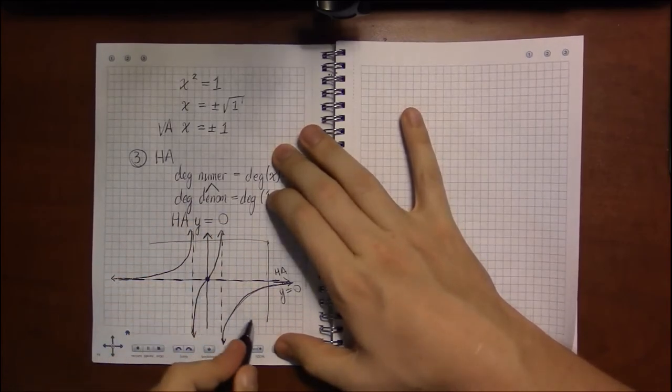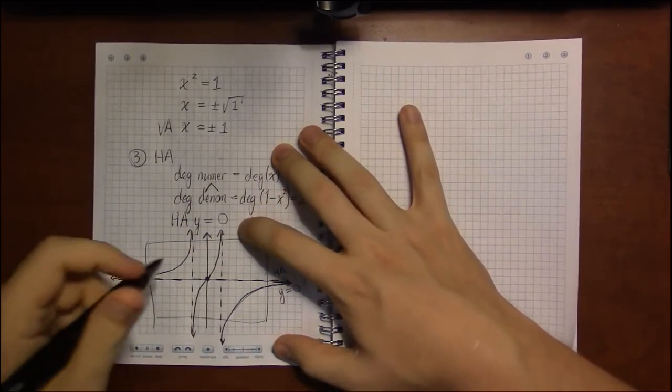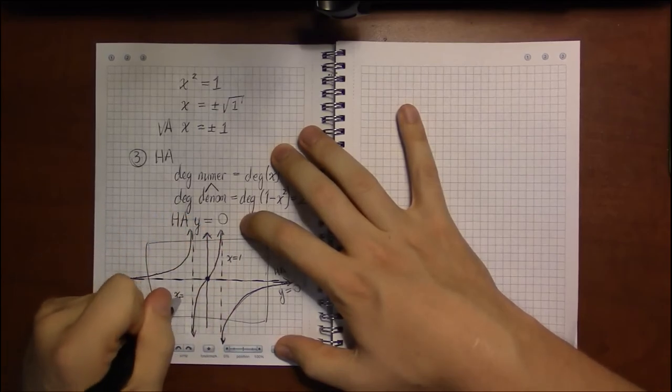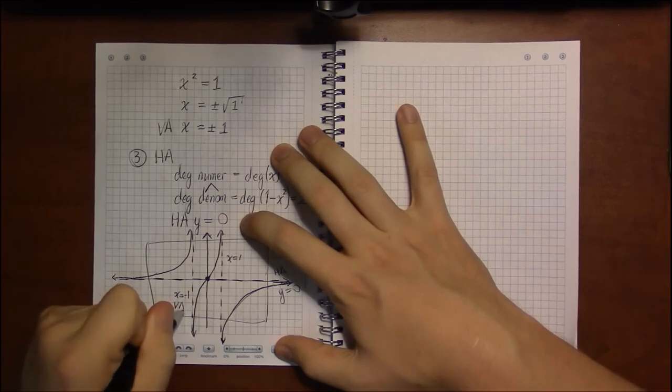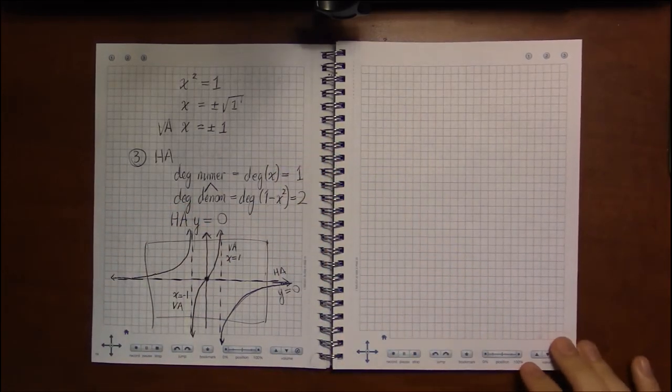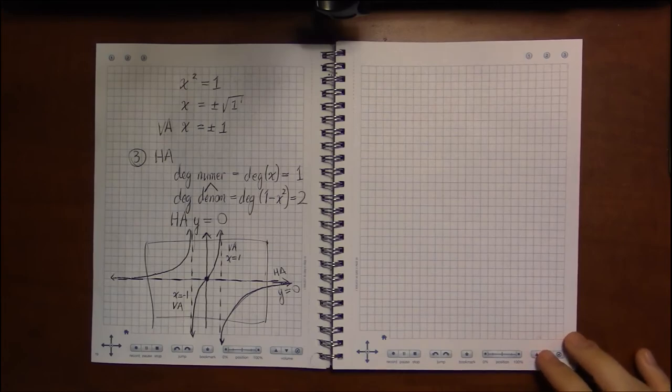With this being x equals 1. This is x equals -1. And both of these are vertical asymptotes. Long and tedious. Yes. But required.